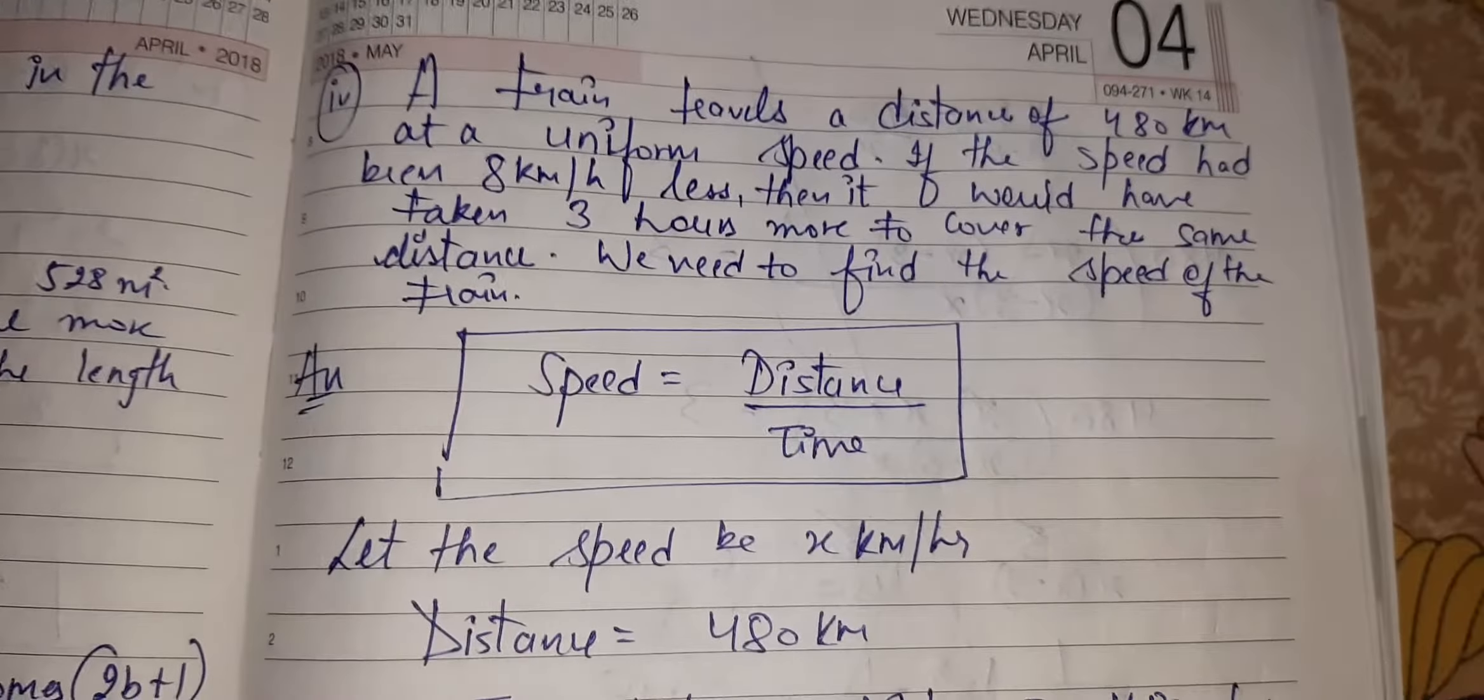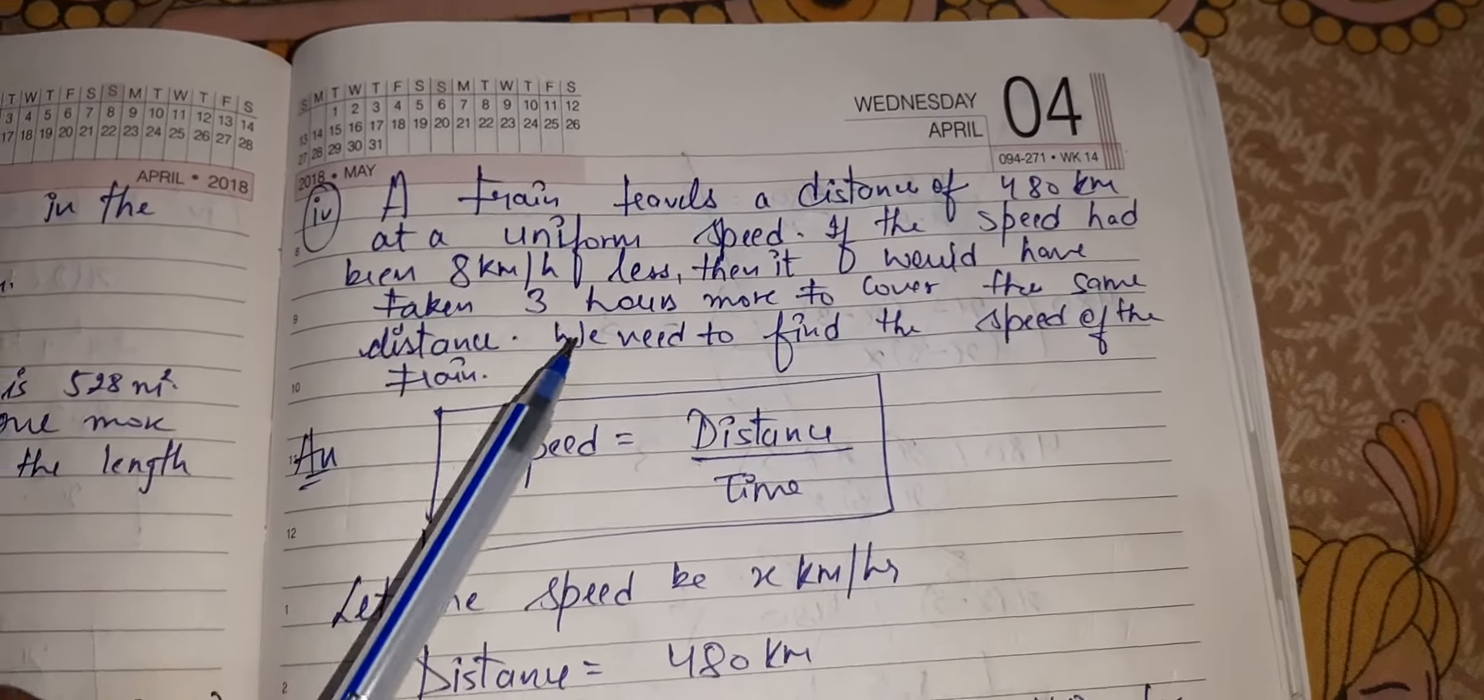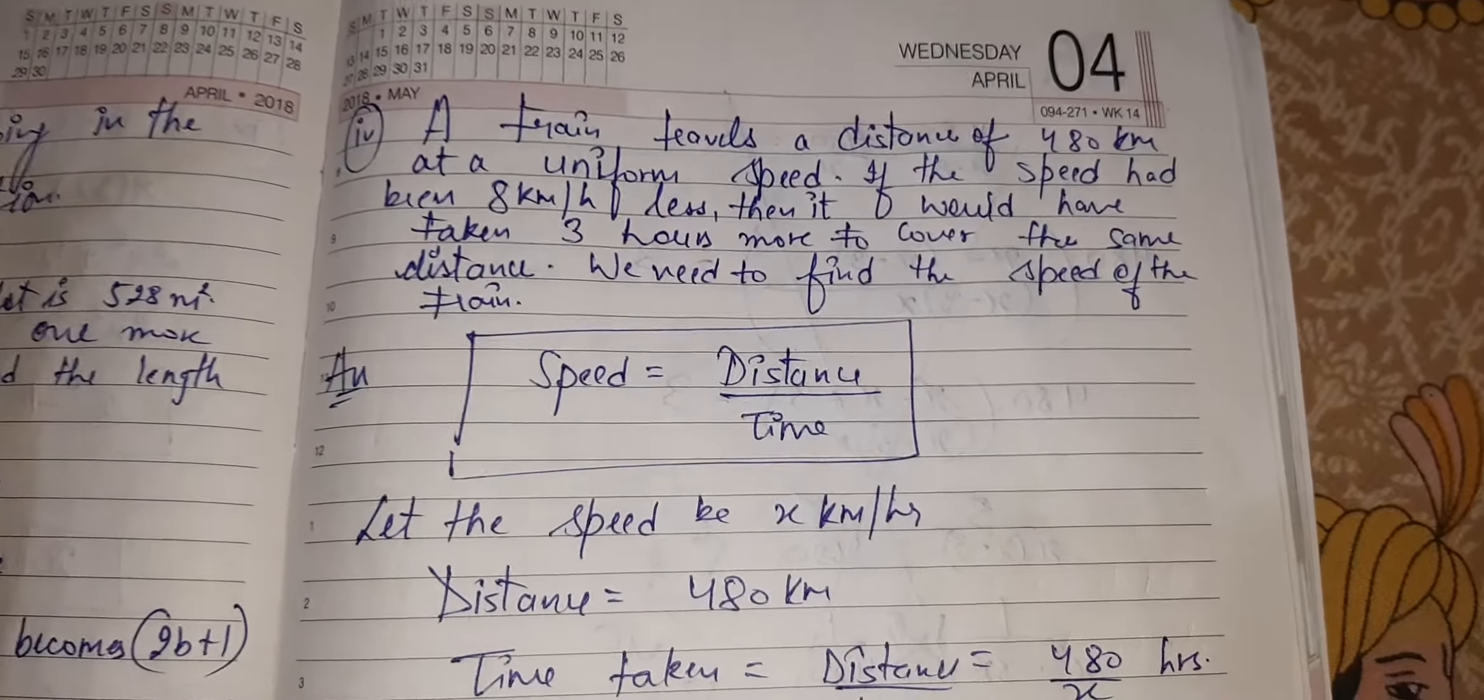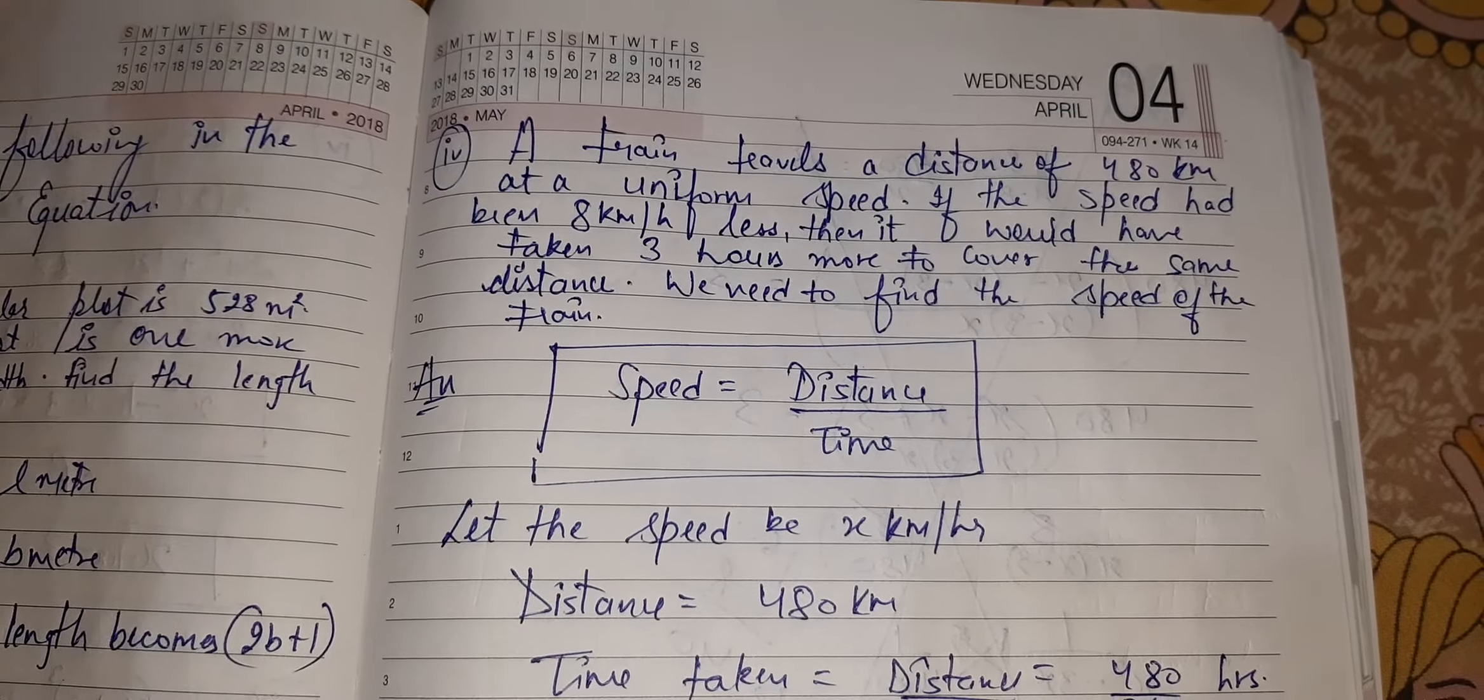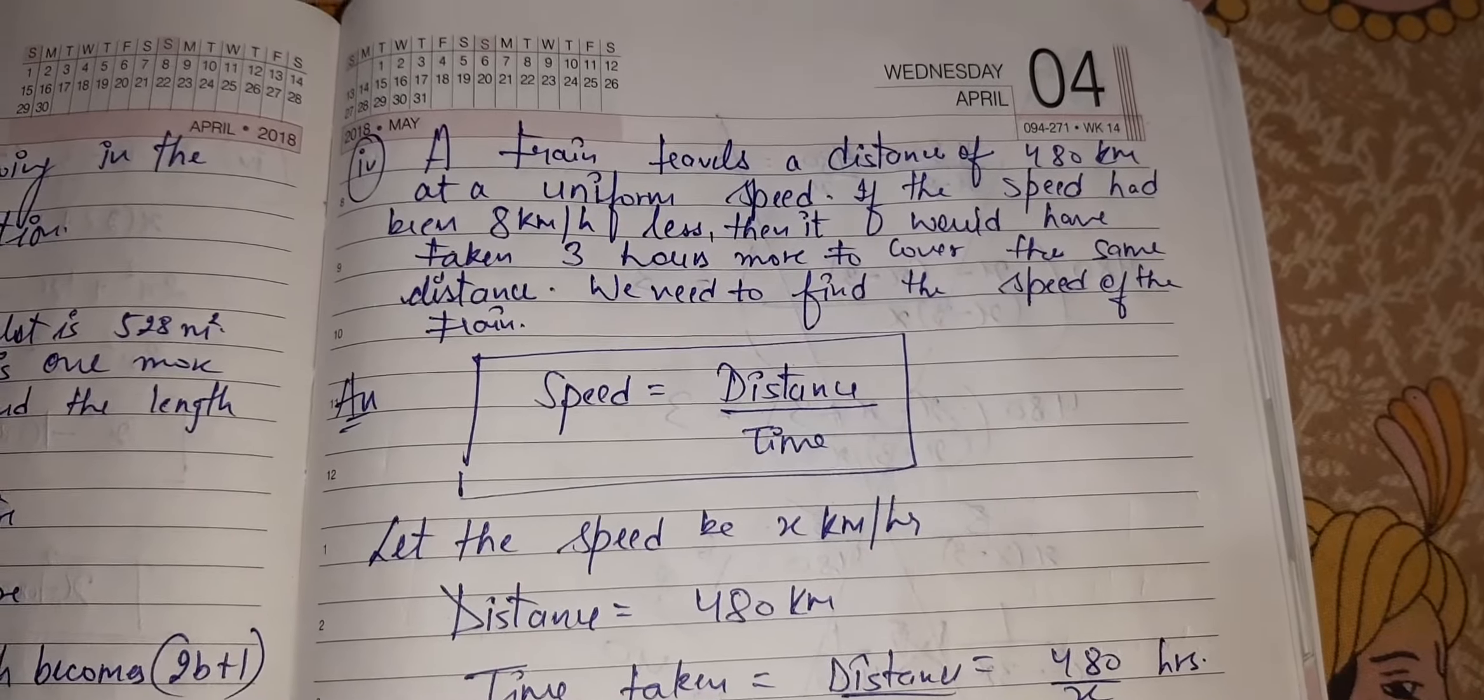Third part of it is homework. Now see the fourth part. The very important part. A train travels a distance of 480 km at a uniform speed. Distance is 480. Keep this in mind. If the speed had been 8 km per hour less, then it would have taken 3 hours more to cover the same distance. We need to find the speed of the train.